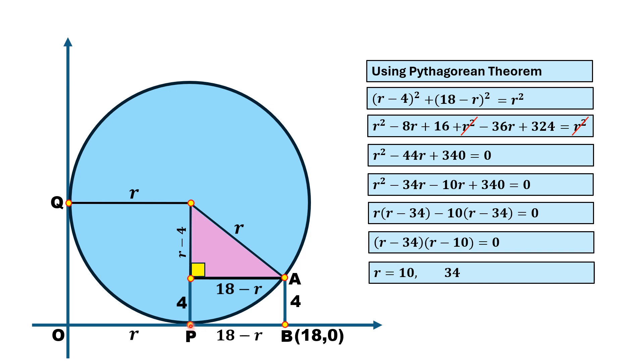Since the whole length is 18, r must be less than 18. Hence, the value r = 34 is not valid, and thus the radius of this circle is 10 units. That is the answer.